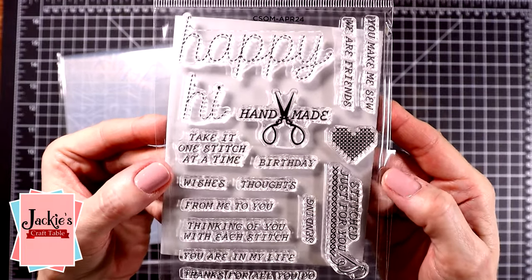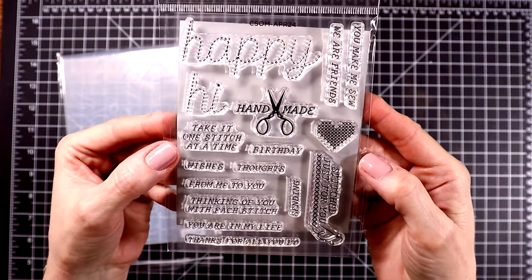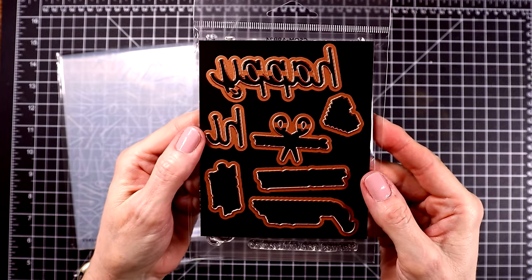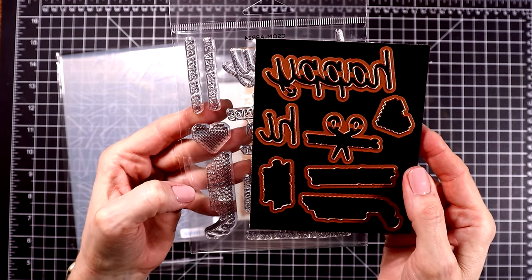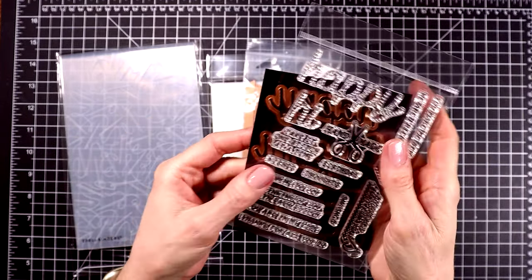Let's start by showing you some of these Club Kits. I have the clear stamp and die of the month Club Kit first. It's called Happy Stitching and most of them are sentiments, so this is a great one to mix and match all of your clubs with. Then it has the coordinating dies and you can buy this Club Kit with just the stamps if you prefer.